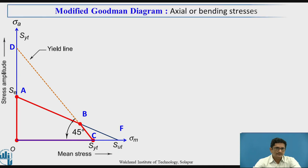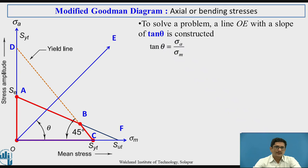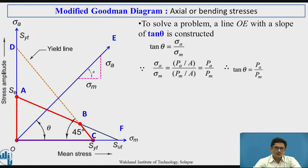To solve a problem, a line OE with a slope of tan theta is constructed, where point E is on the line. Sigma_A and sigma_M are used. The angle theta is such that tan theta equals sigma_A divided by sigma_M, which can also be written as the amplitude force PA divided by the mean force PM instead of amplitude stress divided by mean stress. Therefore, tan theta also equals PA by PM.